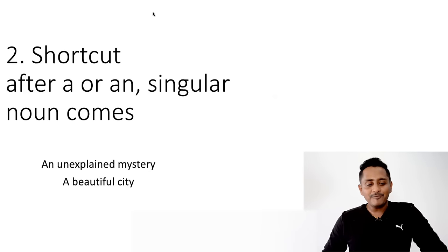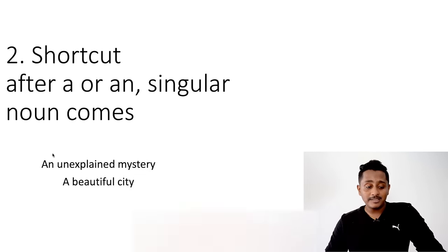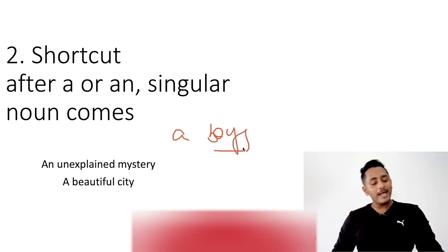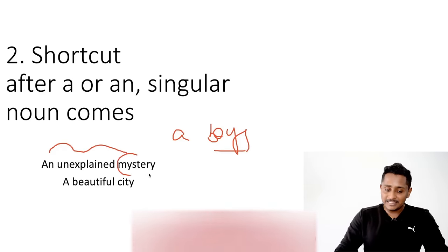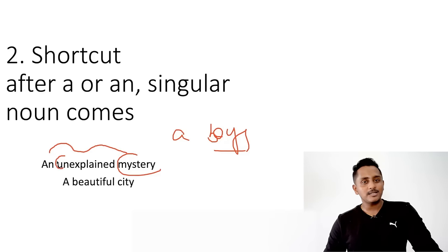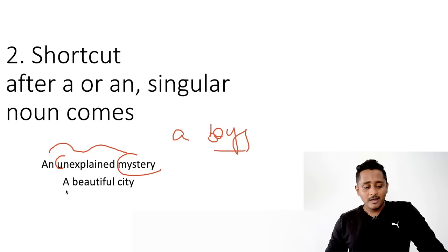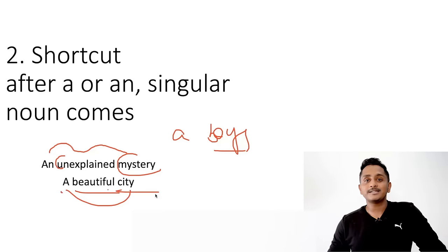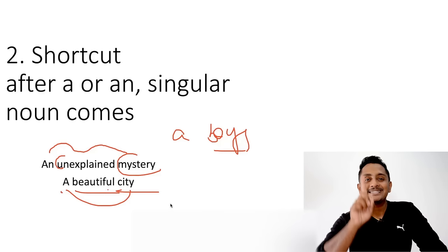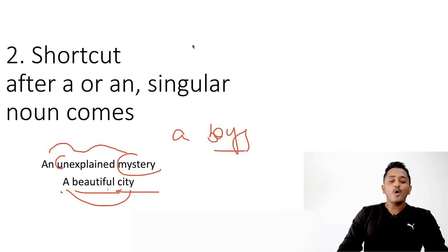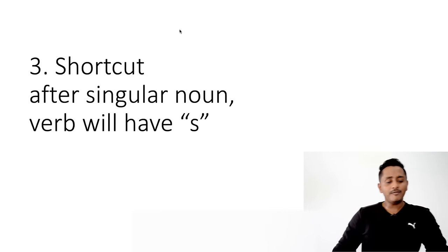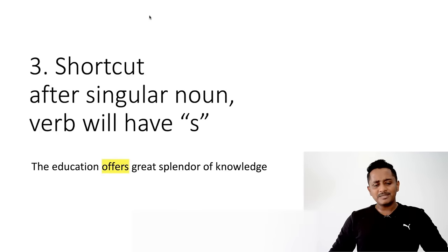Shortcut number two: after 'a' or 'an', only a singular noun comes. You never say 'a boys' — you say 'a boy,' 'a pen,' 'an unexplained mystery.' 'An' comes if the following word has a vowel-pronouncing sound. So if the blank follows 'a beautiful dash,' your answer must be a singular noun, not a plural noun.